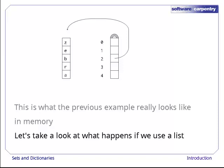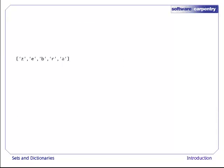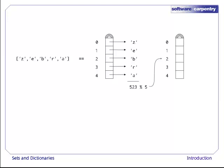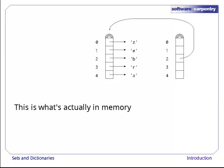Let's see what happens if we try to put a list in the hash table instead. We'll start with a list containing the same five characters, z, e, b, r, and a. Our list is represented in memory like this, so we add up the character's values, take the remainder mod 5, and put a reference to the list in location 2 in the hash table. This is what's in memory when we're done.